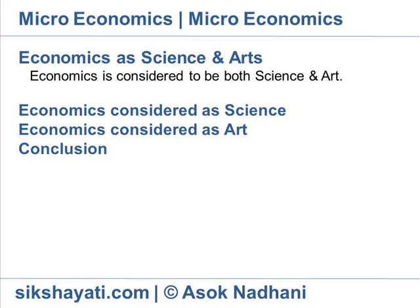Economics is considered as science because its knowledge is systematized. It establishes the cause and effect relationship between two economic phenomena. Its study depends on estimations and its laws have the ability to predict events with a reasonable degree of exactness. However, economics cannot predict as accurately as the physical sciences.